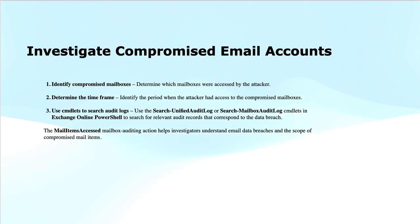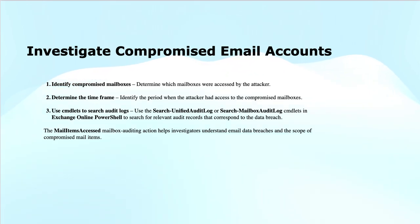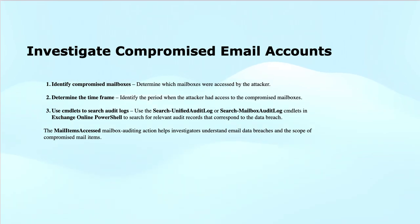When it comes to the investigation of compromised email accounts: a compromised account is where an attacker gains access to a user account and operates as the user. To help organizations investigate compromised email accounts, Microsoft 365 audits the access to mail data by mail protocols and clients using the MailItemsAccessed mailbox audit action, which can help investigators better understand email data breaches or identify the scope of compromise to specific mail items. Organizations should complete the following steps: identify the mailboxes that have been compromised, determine the time frame when the attacker had access, and use the Search-UnifiedAuditLog PowerShell cmdlet and the Search-MailboxAuditLog cmdlet in Exchange Online PowerShell to search for audit records corresponding to the data breach.